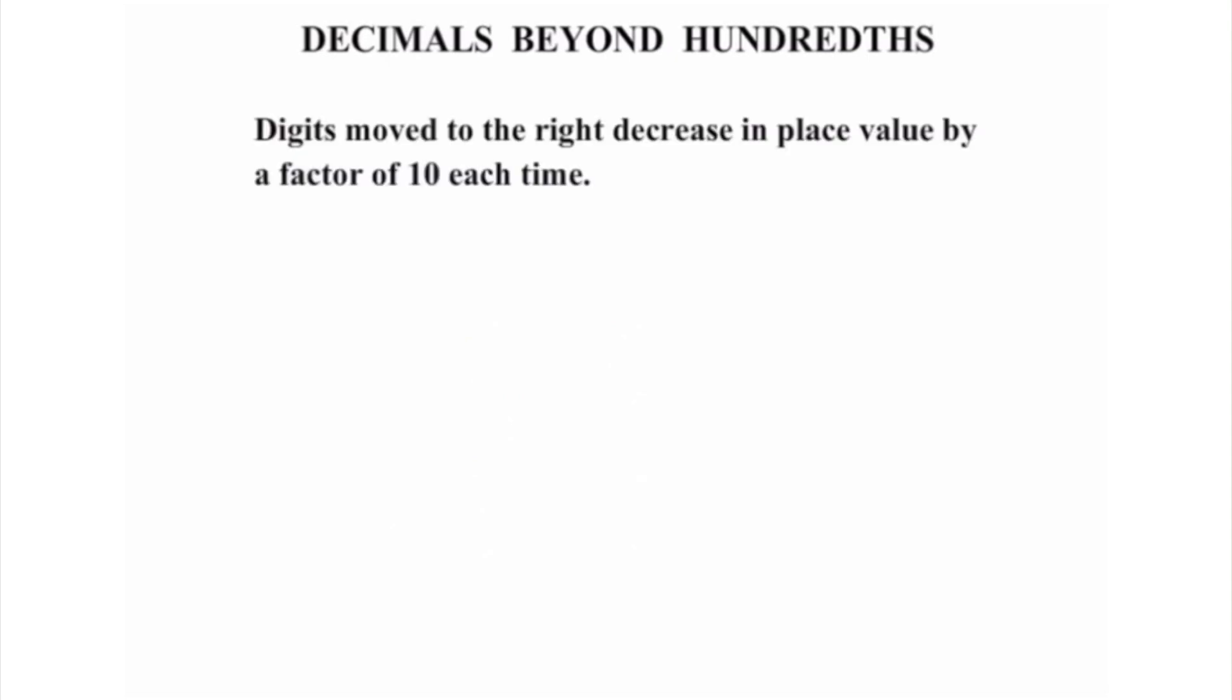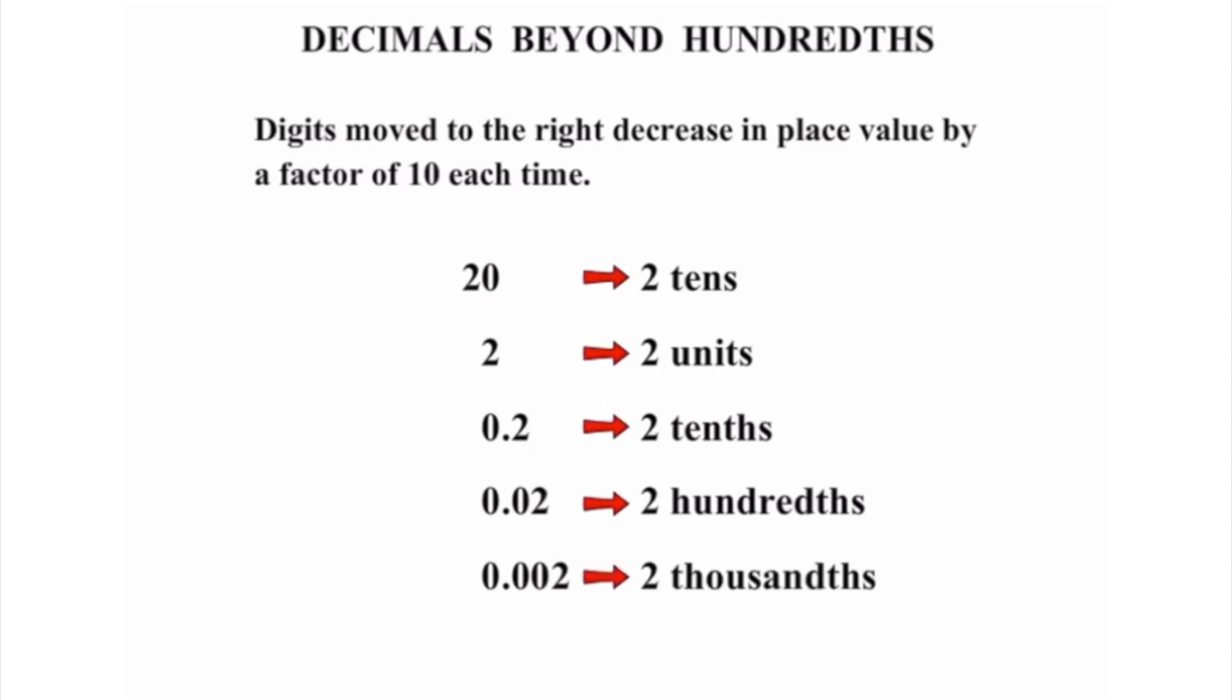Now we're going to look at the reverse. Digits moved to the right decrease in place value by a factor of 10 each time. Let's start off with something we've looked at: 20 is 2 tens. Now put the 20 down but then get rid of that zero, move things to the right, then we're down to 2 units or just 2. Put our 2 down, move it to the right. It's actually 0.2 now, and that is 2 tenths. 0.2, move that to the right, put a zero there, we've got 0.02, which is 2 hundredths. Now we're going beyond hundredths. There's our 0.02, move it again to the right, put a zero there, we now have 2 thousandths.